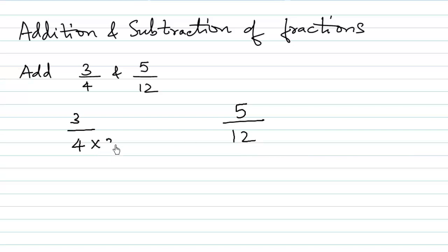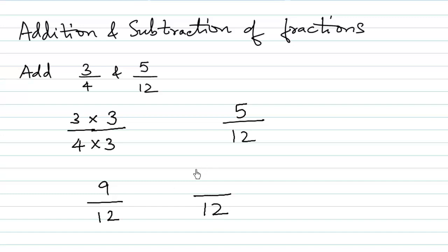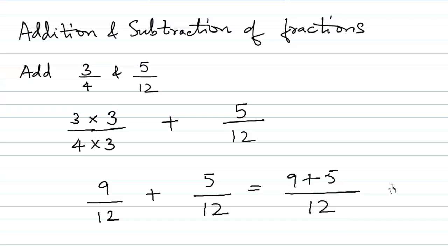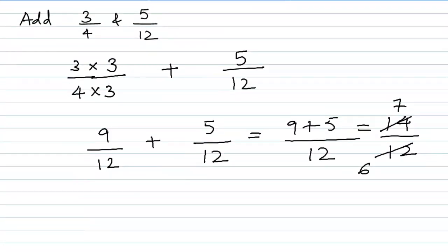We multiply the denominator 4 by 3 so that it becomes 12, and we also multiply 3 in the numerator. So both fractions will have a common denominator of 12. Then we add the numerators: 9 + 5 is 14, giving us 14/12. We can simplify this as 7/6. So the answer is 7/6. This is where LCM is very much useful.